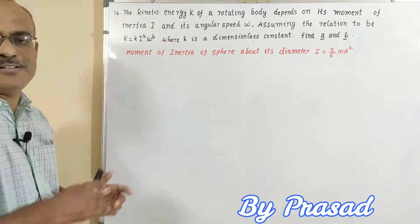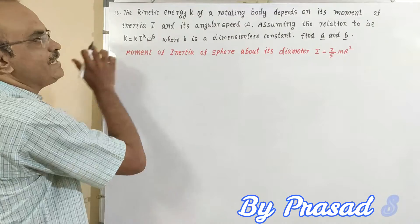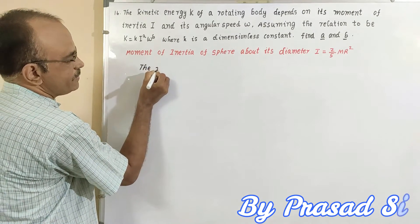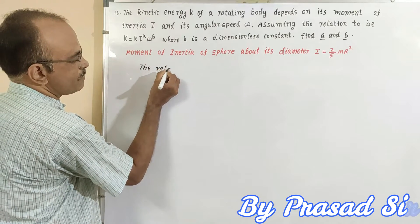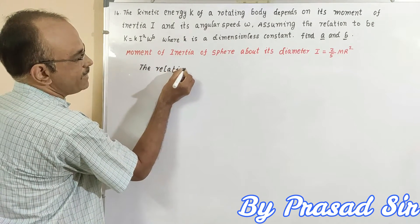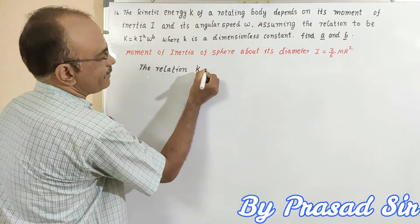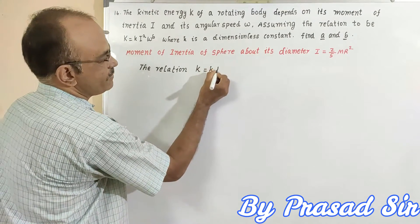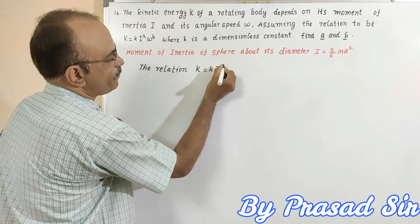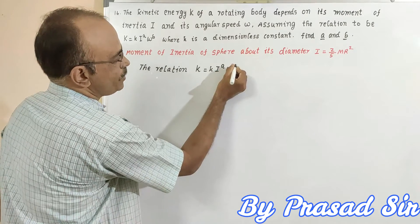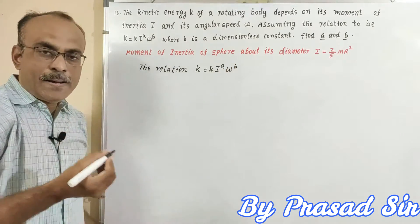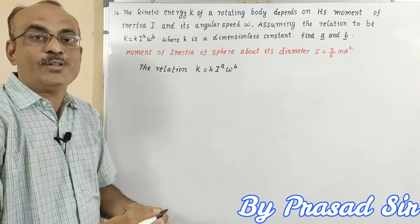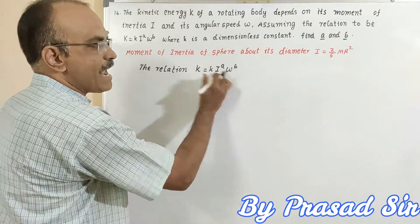To solve this question, first I will write the relation here: K equals small k (constant) times I to the power of a and omega to the power of b. To solve for a and b, we first need to know the dimensional formula for K, I, and omega.